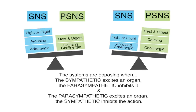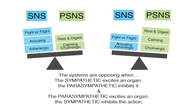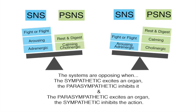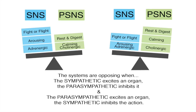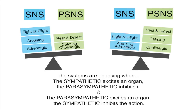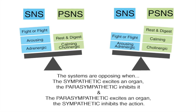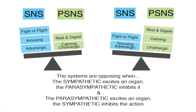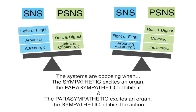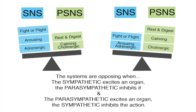The autonomic system is further broken down into the sympathetic, or SNS, and parasympathetic, or PSNS. These are opposing systems. The SNS is the fight or flight response, also known as arousing or adrenergic. The PSNS is the rest and digest response, also known as calming or cholinergic. When the sympathetic system excites an organ, the parasympathetic system inhibits it, and vice versa. Our focus in this lesson is on how cholinergic and anticholinergic agents affect the parasympathetic nervous system.